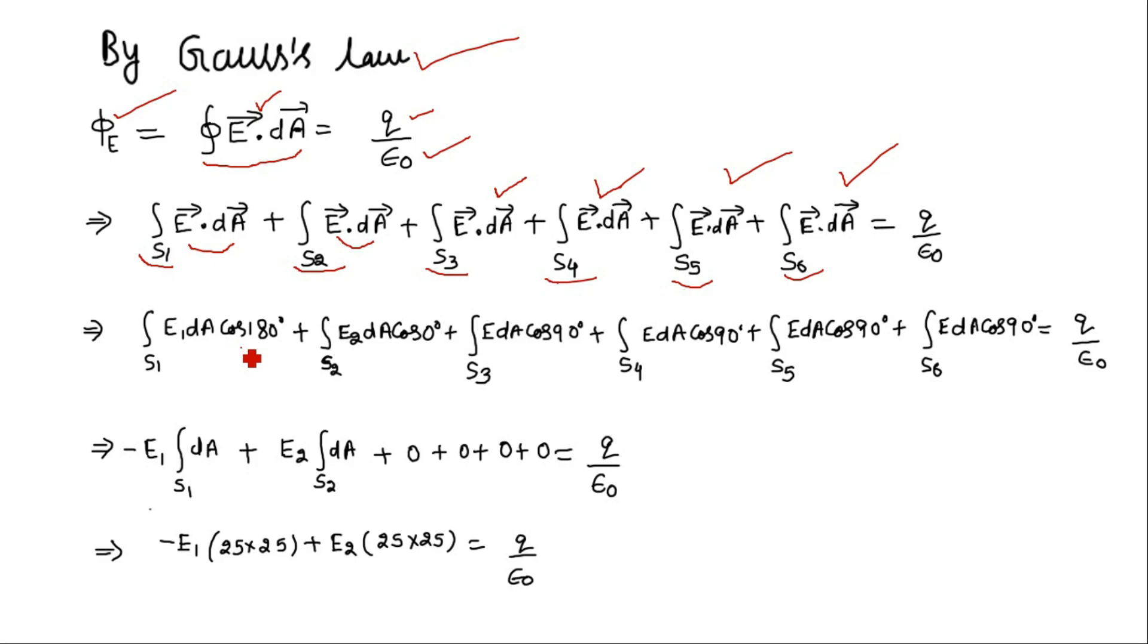So if I put these values: this is 180 degrees, this is 0 degrees, all other angles are 90 degrees. We know that cos 180 is minus 1, and E1 is taken outside because the magnitude of electric field is constant everywhere on the face.